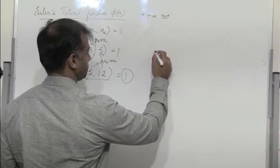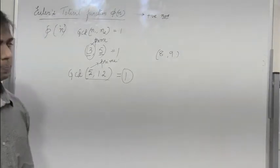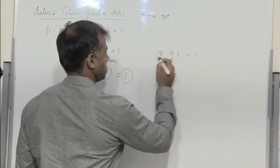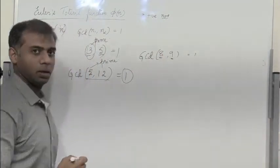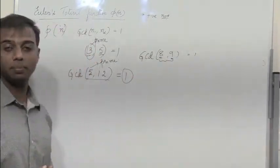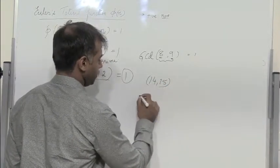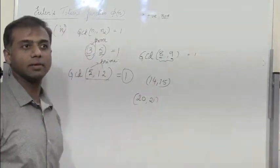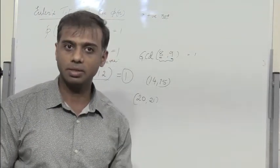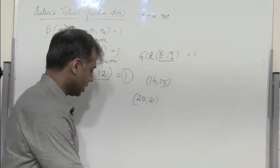Consider 8 and 9. Neither are prime numbers, but the only number which can divide both 8 and 9 is 1, so GCD of 8 and 9 is 1. We observe that any two consecutive numbers are always relatively prime — for example, 14 and 15, or 20 and 21. So relatively prime numbers are numbers whose GCD is equal to 1.